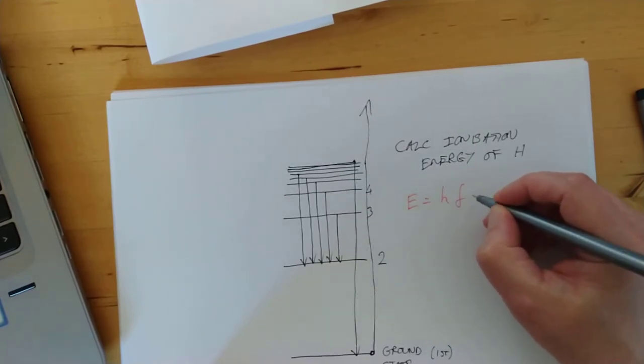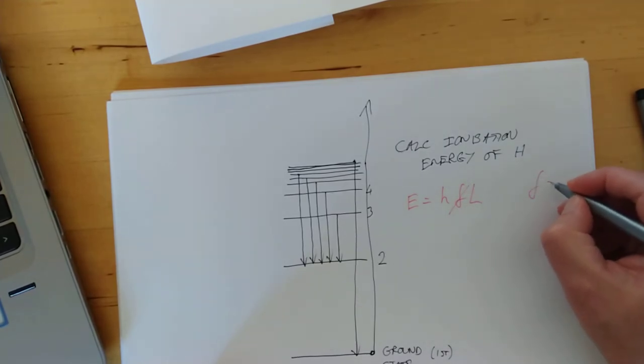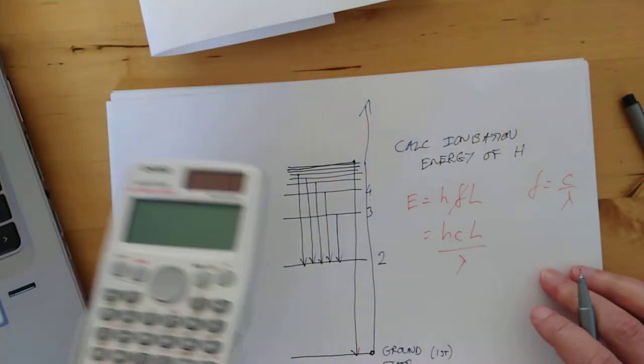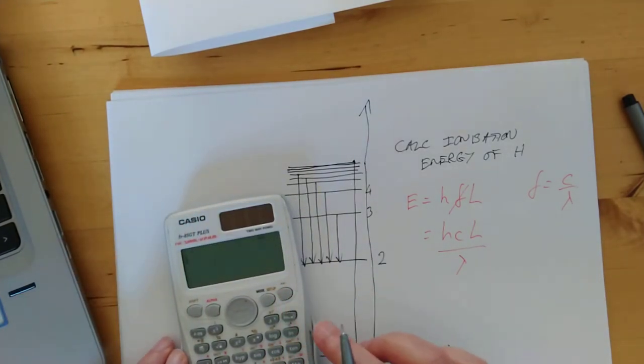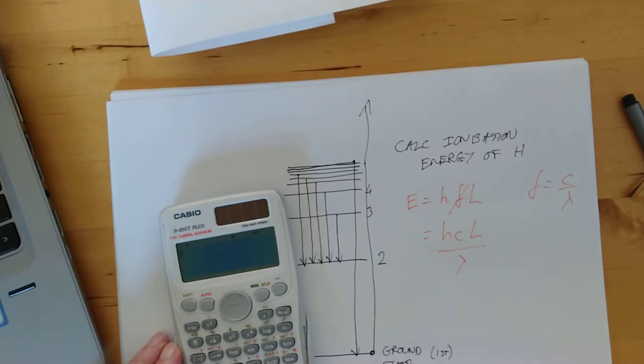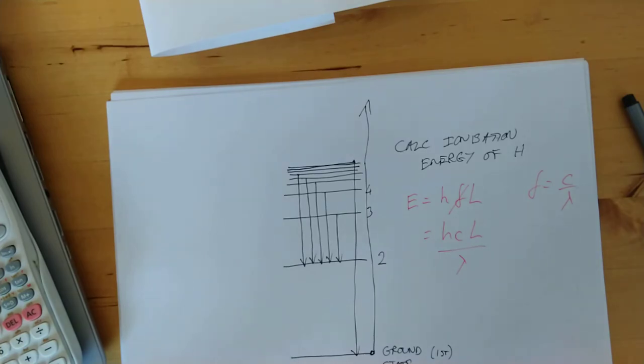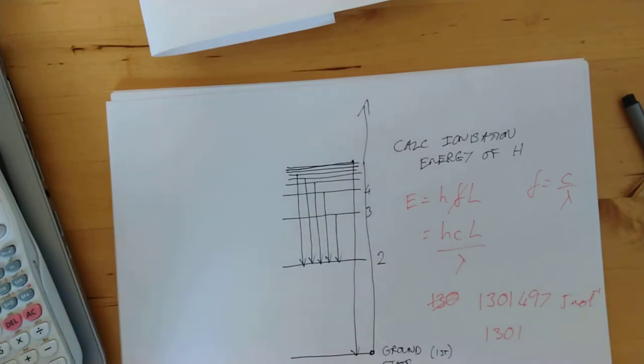E equals HFL. We're going to substitute in F equals C over lambda. So, E equals HCL over lambda. Get ourselves a calculator. If you did pause it and you're coming back to check your answer, the answer is 1,301,497 joules per mole. Which we can turn into kilojoules and it becomes 1,301. If we just open ourselves a little tab here and then double check what the ionization energy of hydrogen is. Let's not worry about this. Let's stick with the theory in that way. I don't have to argue with slow laptops.